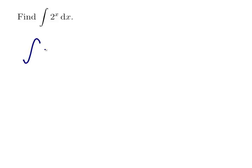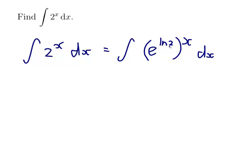So the integral of 2 to the x dx, the integral of e to the power of ln 2 to the x dx, because e to the ln 2, the e and the ln will cancel each other out, and that'll be 2.